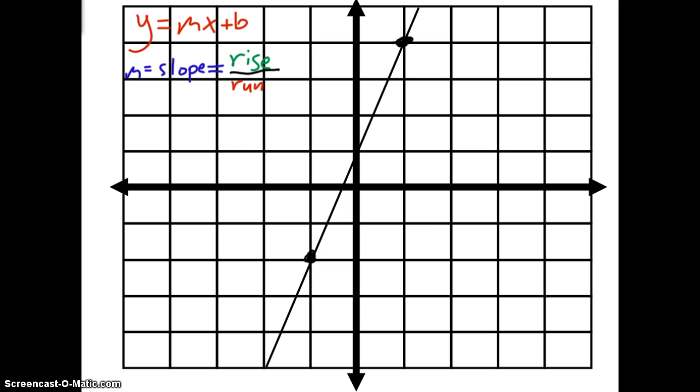Now my rise is how far up and down it goes from one dot to the other dot. I always like to go left to right because that's the way I read when I read books. So I'm going to start at the dot on the left, and I'm going to go up. And that looks like one, two, three, four, five, six lines. So I write plus six to remind myself.